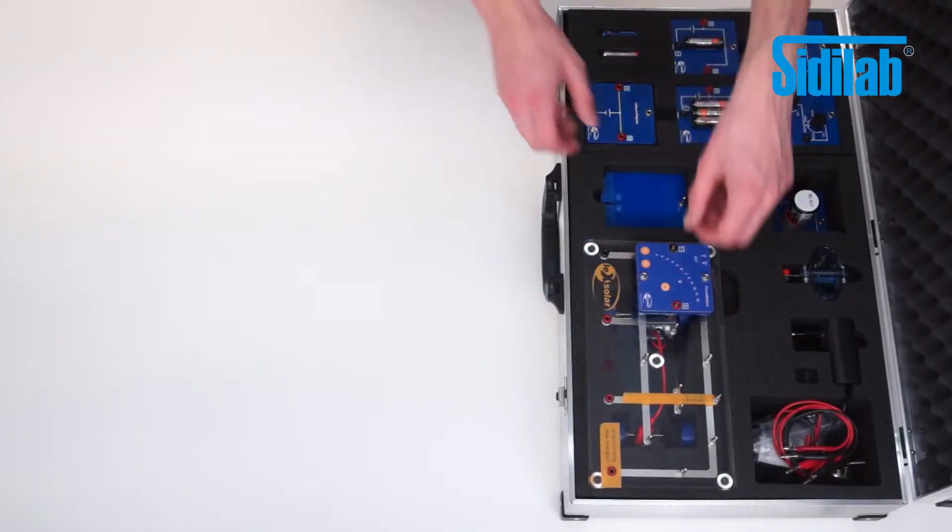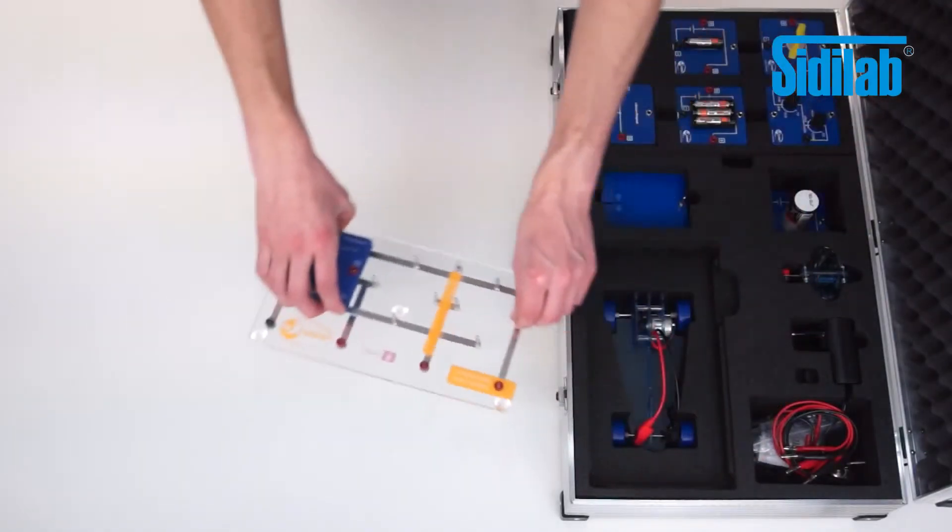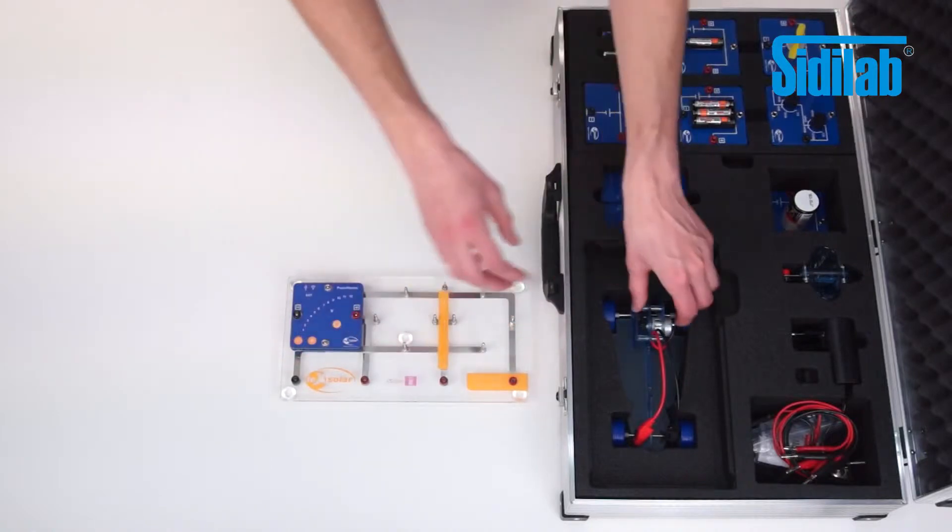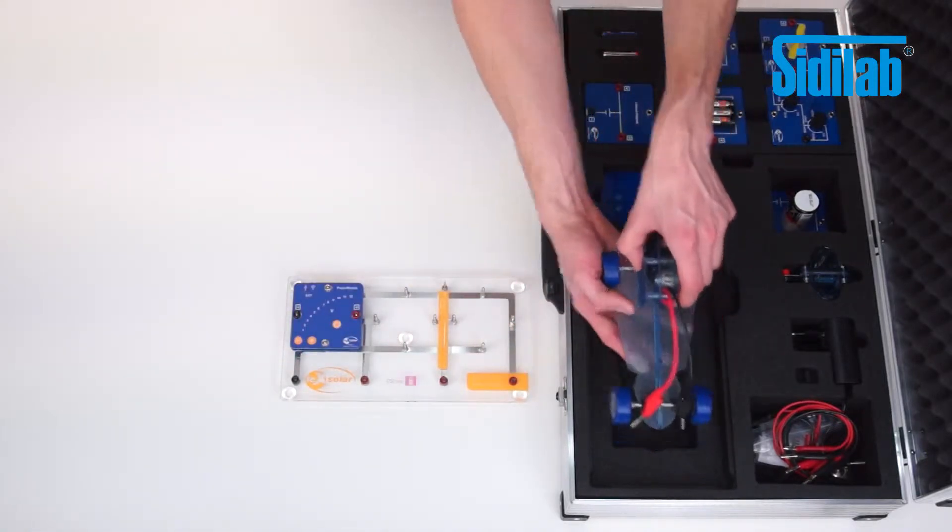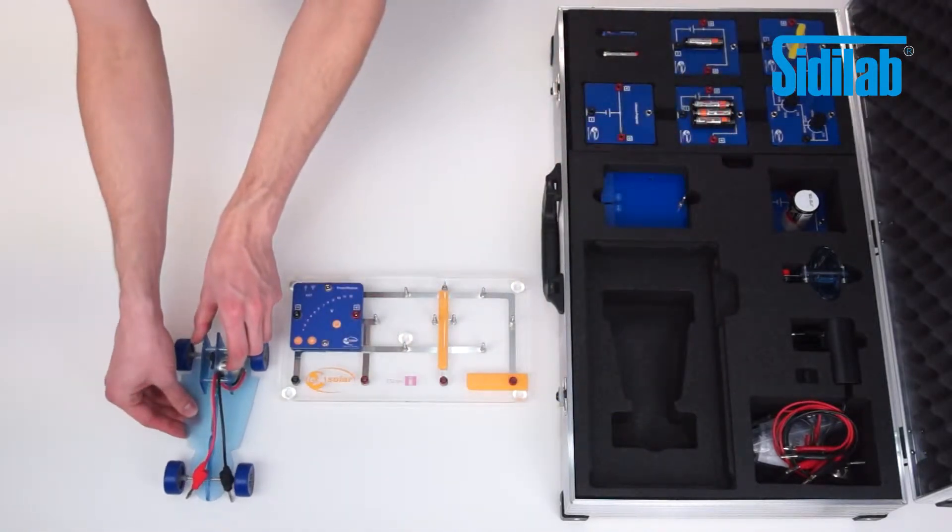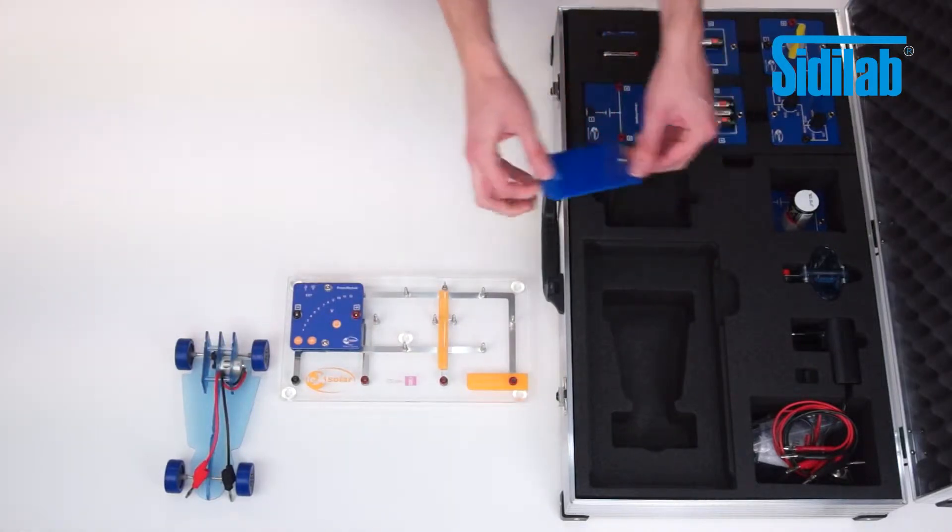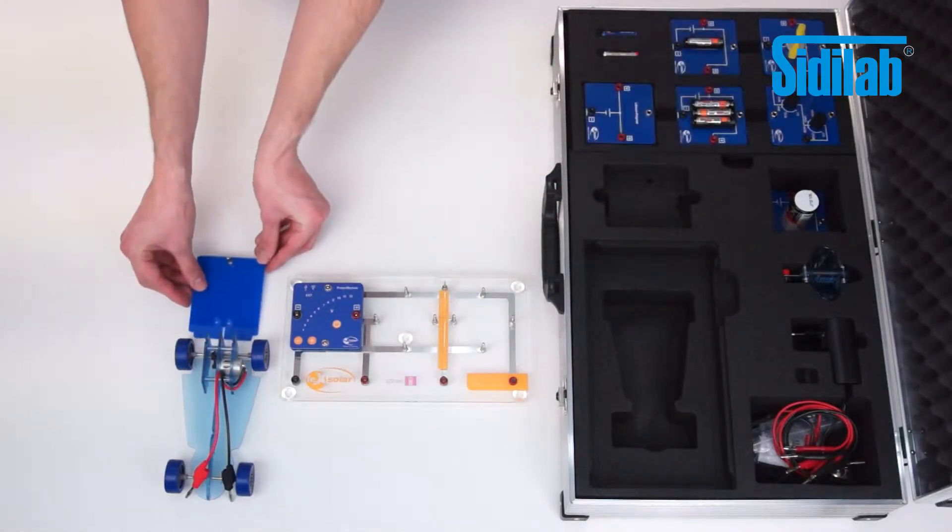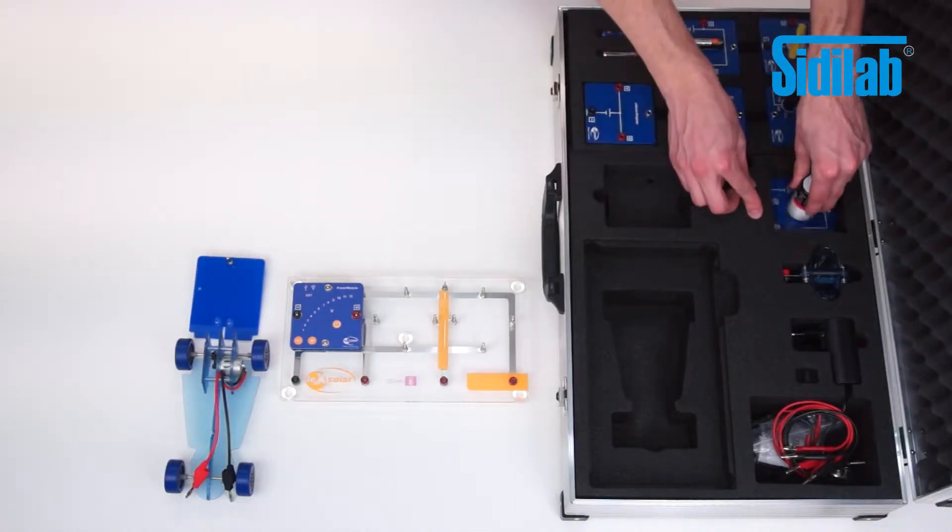For this we need the base unit with the power module, the electric model car with the appropriate battery adapter, and the lead battery.